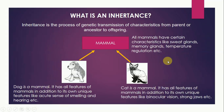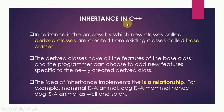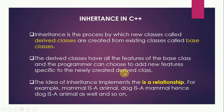This concept has been introduced in object oriented programming also and today we are learning inheritance in C++. Inheritance is the process by which new classes called derived classes are created from existing classes called base classes. If we have already a class and we want to add some new features to it, instead of disturbing that class we can use inheritance to extend it. The derived classes have all the features of the base class and the programmer can choose to add new features specific to the newly created derived class.